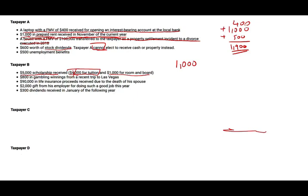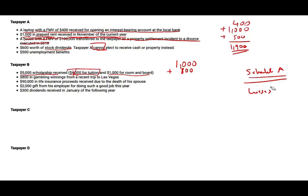$800 in gambling winnings from a recent trip to Las Vegas — yes, gambling winnings are included. If you have gambling losses, you can deduct them on Schedule A up to the amount of gambling winnings. You still have to include the winnings regardless. The losses go on Schedule A; they don't directly net the winnings — they net indirectly only if you itemize. The maximum losses you can take in this scenario is $800, bringing winnings down to zero.